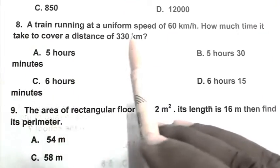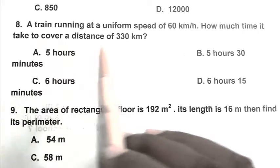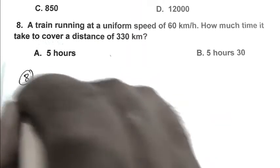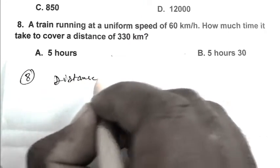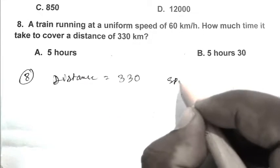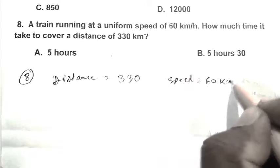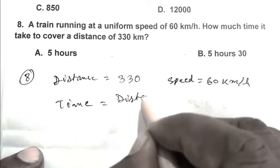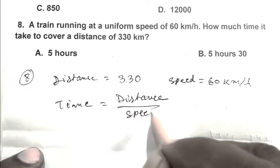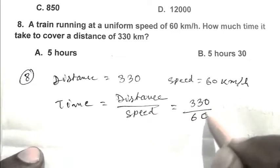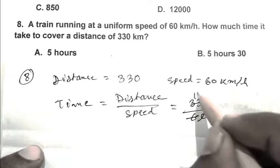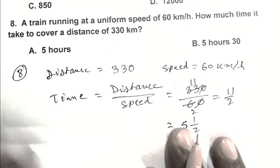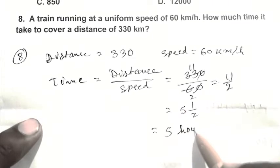Question number 8: A train running at a uniform speed of 60 kilometer per hour, how much time it takes to cover a distance of 330 km? So friends, distance 330 km, speed 60 km per hour. So time equals distance upon speed, that is 330 km upon 60 km per hour, that is 5 and a half hours. So friends, that is 5 hours 30 minutes. So D is the right answer.